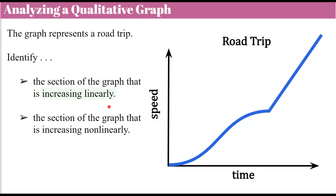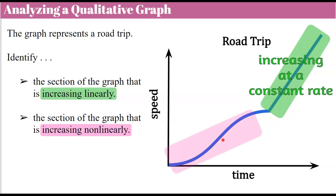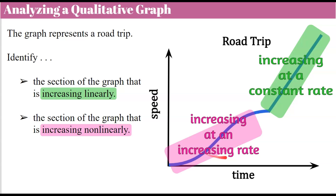Welcome back. First, we're going to talk about increasing in a linear fashion — we're looking for our straight segment. This is increasing at a constant rate, and that's what's special about a line: it has a slope or a constant rate of change. Here, where we have a curve, we know that this is nonlinear, but we can see that it's increasing from left to right. So we can say that this is increasing at an increasing rate — it's not a constant rate.